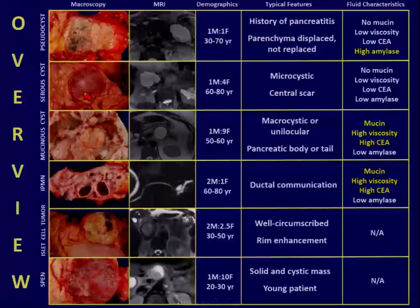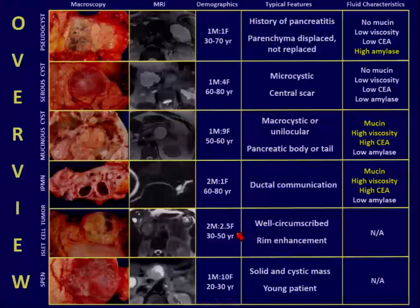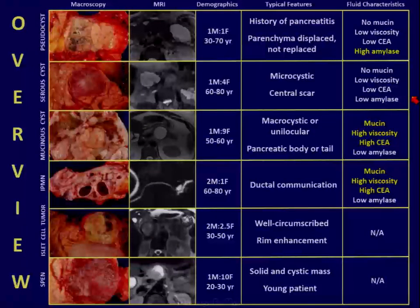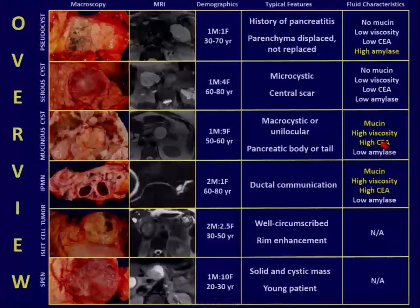This is an overview of pathologic features, MRI features, and demographics as well. Fluid characteristics can be helpful: high amylase suggests acute pancreatitis. No mucin, low viscosity, low CA, and low amylase would favor a serocyst. The presence of mucin, high viscosity, high CA, and low amylase would favor either a mucinous cystic neoplasm or IPMN.